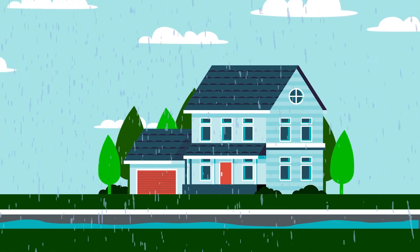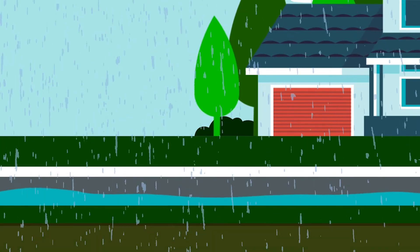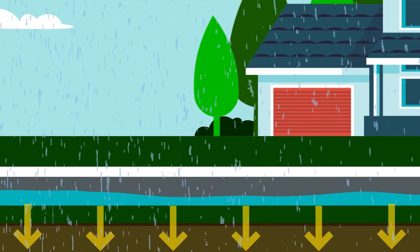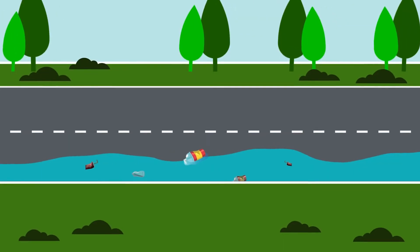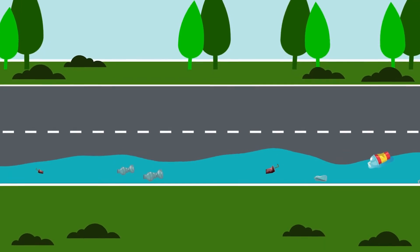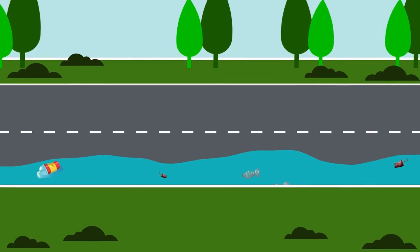Stormwater runoff is water that falls from the sky. It can evaporate or infiltrate into soil, or it can hit impervious surfaces where it gathers pollutants before flowing into local water bodies.